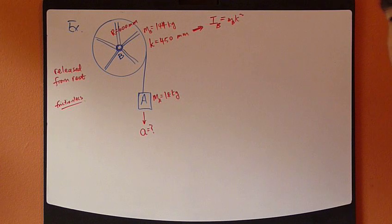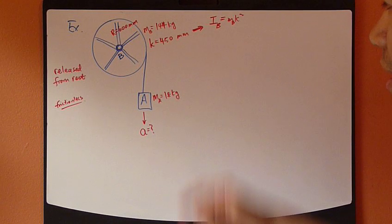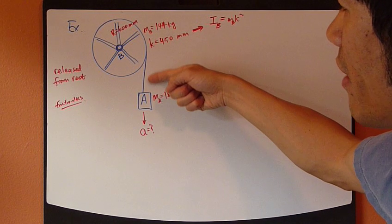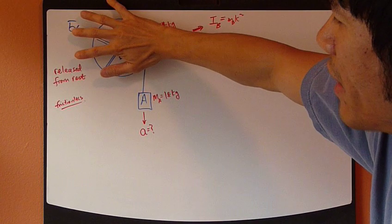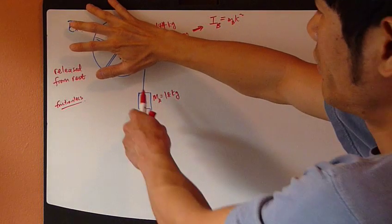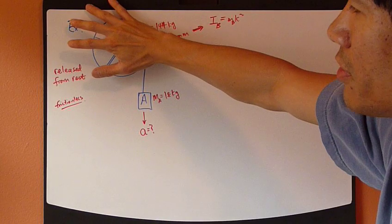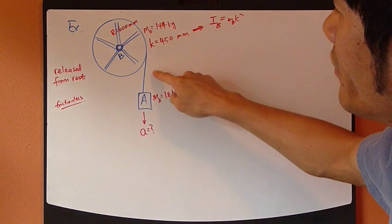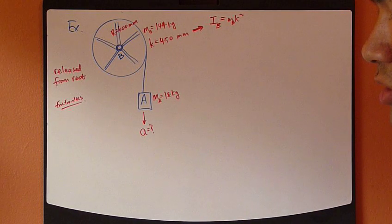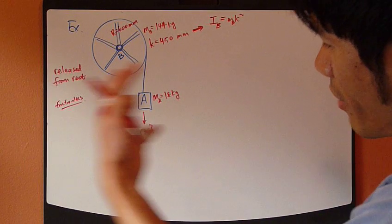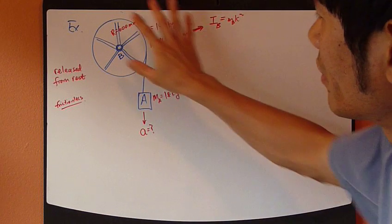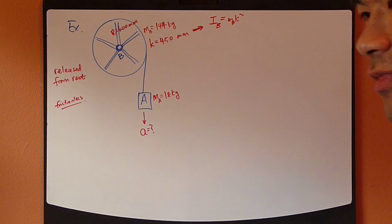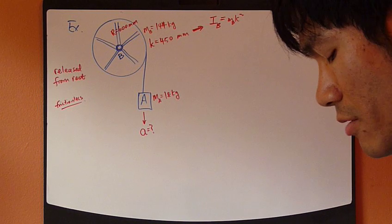We can apply those equations to the whole system, which is more convenient. If you want to separate A from B, it's still possible but more complicated, because in that case you have to account for the tension in the rope. For A you have weight and tension, and for B you have tension and everything else — you'd need to solve both free body diagrams simultaneously. Let's take both as a system and simplify the analysis.